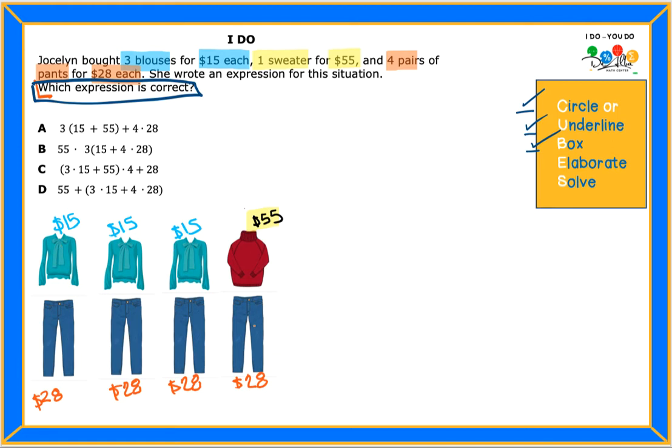And the sweater is just one time. So if I want to have an expression for this situation, I will have to say, you want to repeat three times what number? The fifteen dollars. You see that, guys? These three represents these three blouses, and the fifteen dollars is the value that is being repeated.